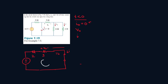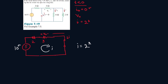We can quickly do a mesh analysis — call this mesh I. The source is 10 volts, so I equals 10 over 5, giving I equals 2 amps. We can then solve for VO: VO equals the current through the resistor times resistance, so 3 times 2, which gives VO equals 6 volts.